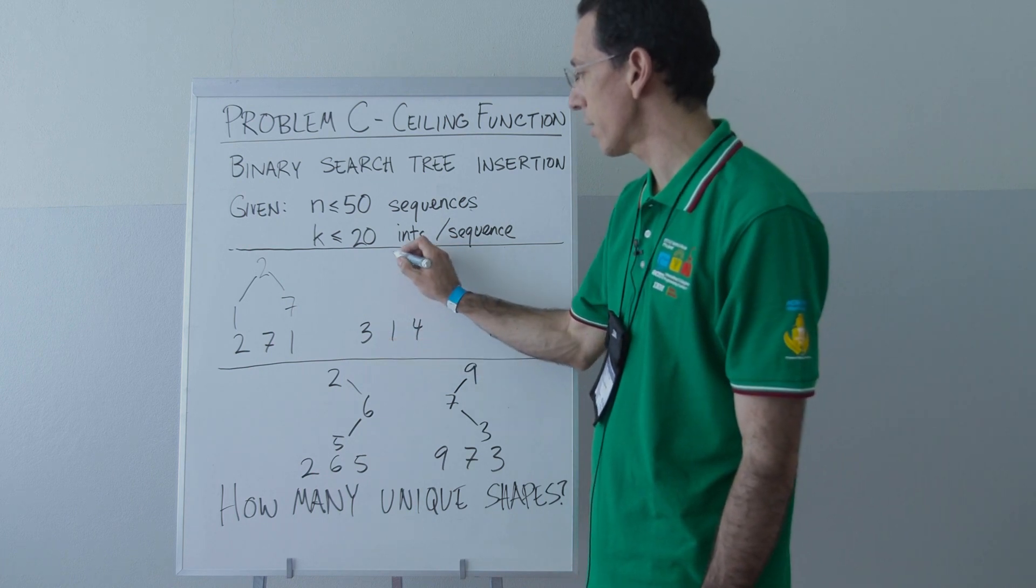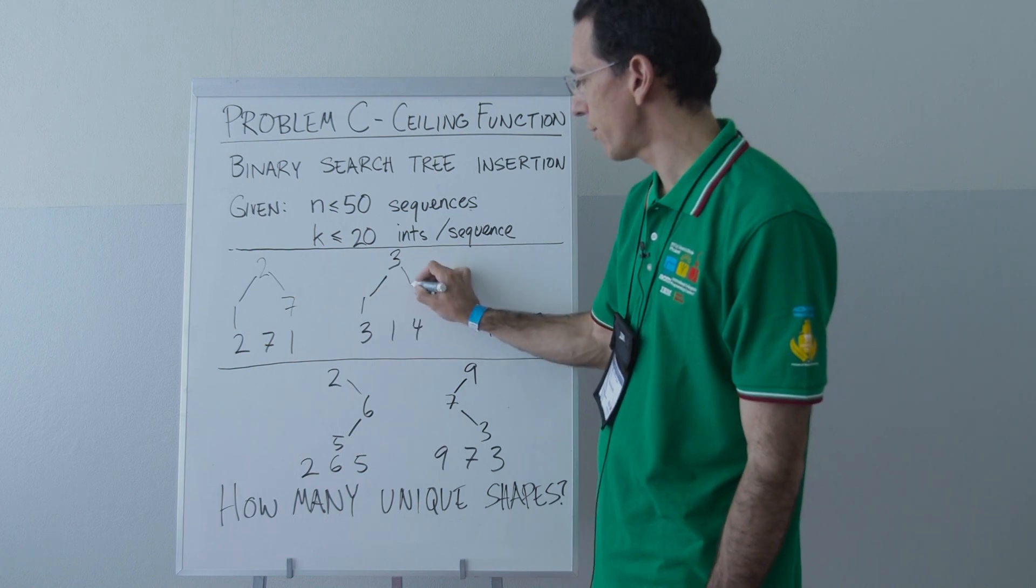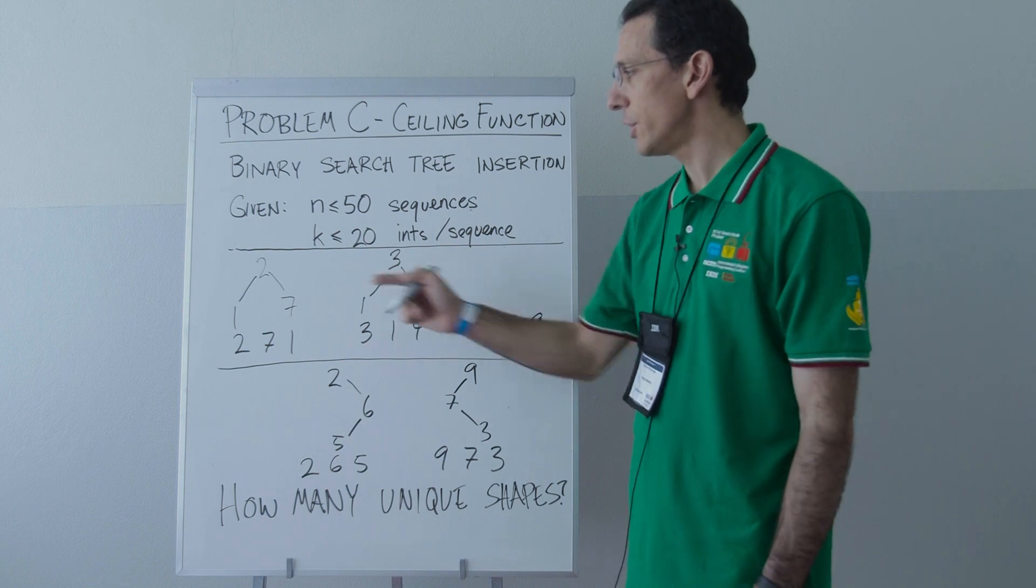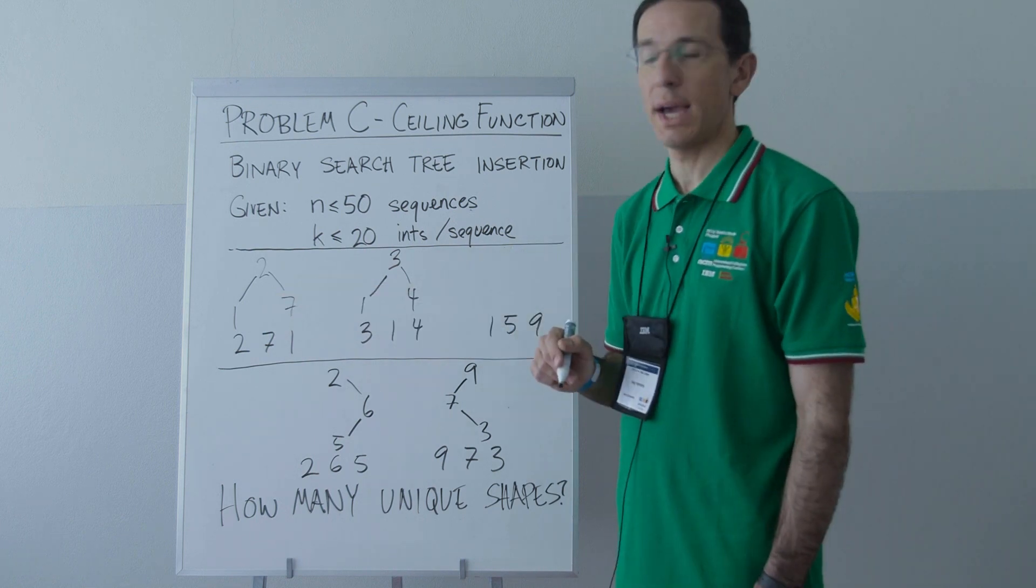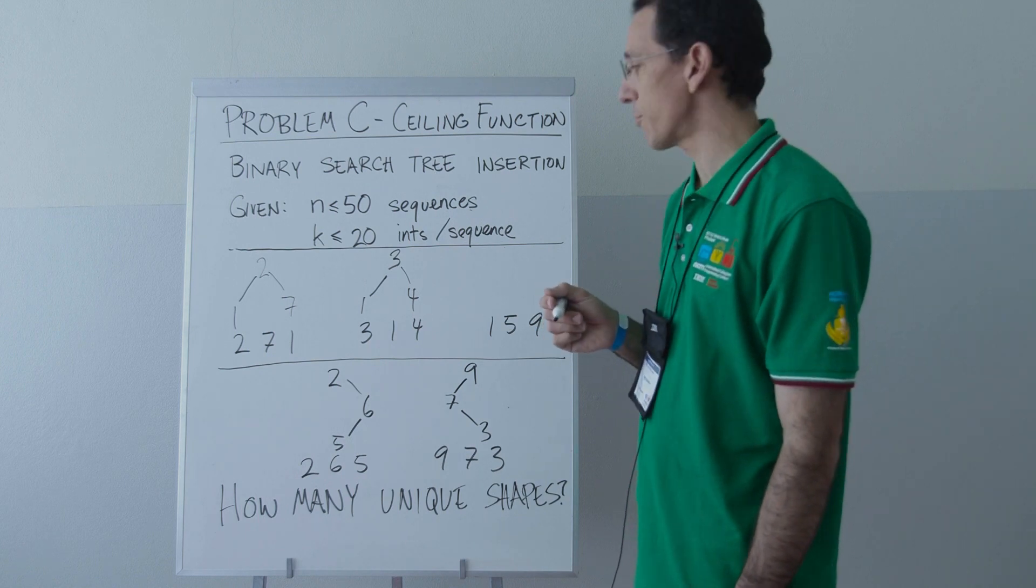If we do the same thing here, we insert 3 at the root, we insert 1 to its left, and we insert 4 to the root's right, and we get this tree. And we notice that these two trees, even though they have different numbers in them, have the same shape, and that is key to this problem.